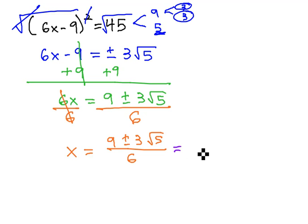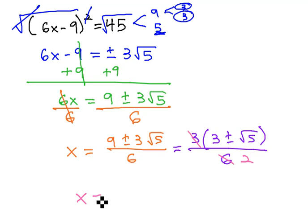So let's factor that numerator. There's a GCF in that numerator of 3. So if we factor out the 3, we're left with 3 times 3 plus or minus the square root of 5 over 6. And now that 3 is a factor, so now we can reduce the 3 and the 6, leaving 2 in the denominator. And we get our final answer of 3 plus or minus the square root of 5 over 2.